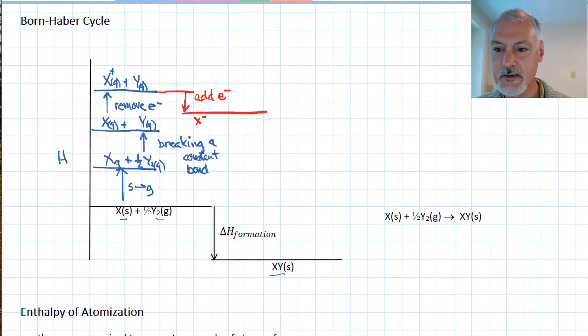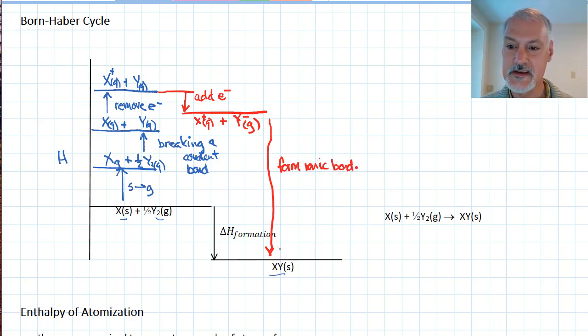So now I have X plus gas, and Y as the anion, the negative form. And in my last and final step, these two ions will combine together to form my ionic product down here. So here we form an ionic bond, and that releases energy, finishing at this state.